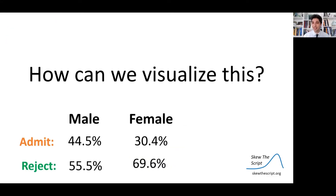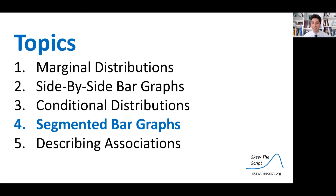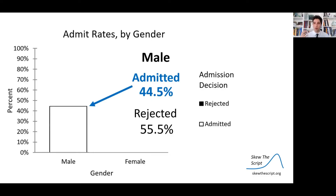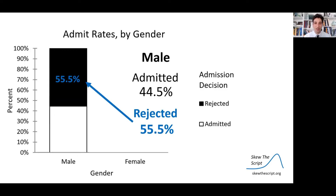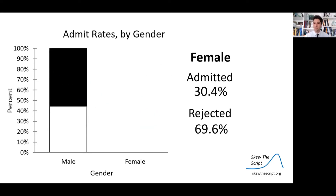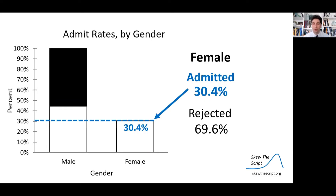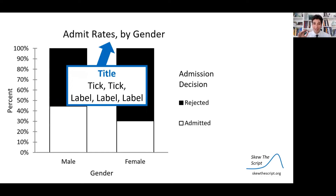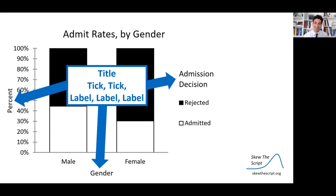We have a bunch of numbers here — how can we visualize this in a nice summary? We can use a segmented bar plot. Setting up axes, among male students about 44.5% were admitted and 55.5% were rejected. I draw the bar showing the proportion admitted up to 44.5% on the y-axis, then fill in the remaining 55.5% to reach 100%. We've now described all 100% of male applicants. Doing the same for female applicants — 30.4% admitted and 69.6% rejected — gives us a segmented bar chart. This follows the title, tick marks, label format needed for the AP exam.